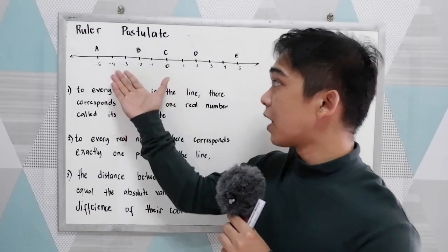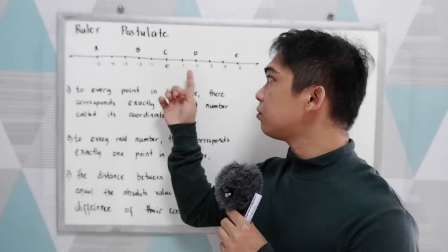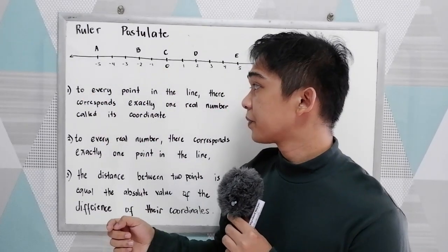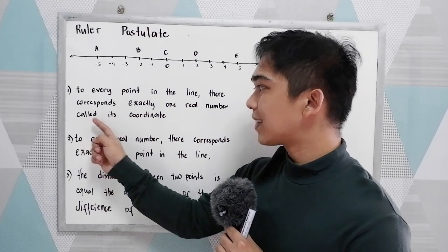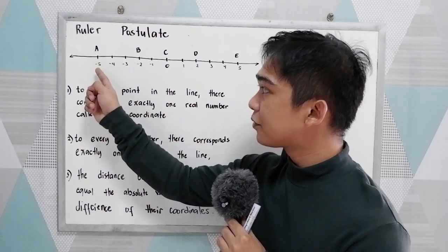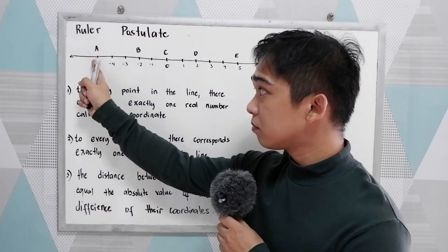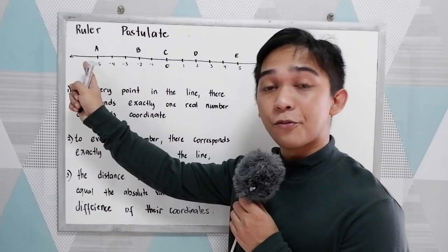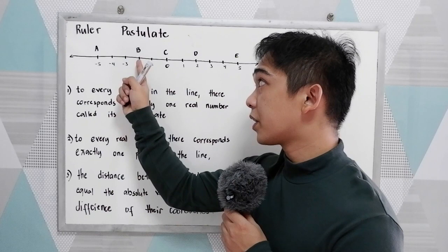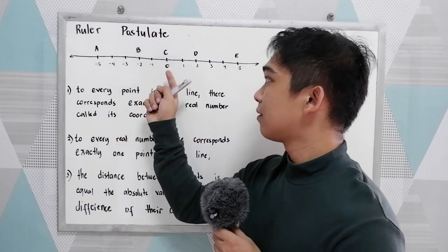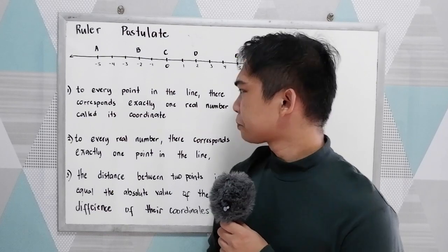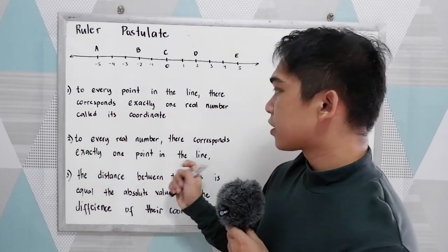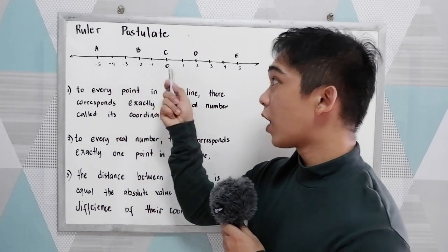You will also encounter the ruler postulate. On a number line, we have zero, the positive numbers, and the negative numbers. To every point on the line, there corresponds exactly one real number called its coordinate. So let's say point A has a coordinate of negative 5, point B has a coordinate of negative 2, C has coordinate 0, D has coordinate 2, and E has coordinate 5. To every real number, there corresponds exactly one point on the line.